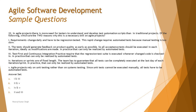Statement four: sprints are of fixed length, so the team has to guarantee that all tests can be completely executed on the last day of each iteration — in practice, that can only be realized by automated tests. There's a contradiction here: testing should be done throughout each iteration, not only at the end. The last day is not reserved for test execution; you can execute tests at any point during the sprint.